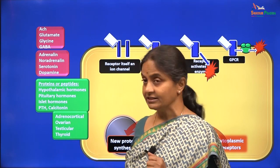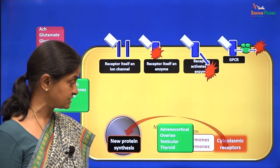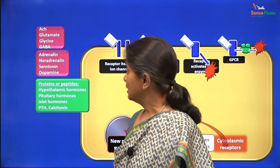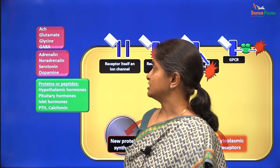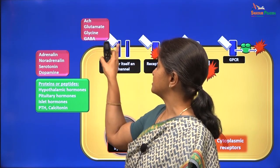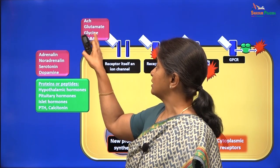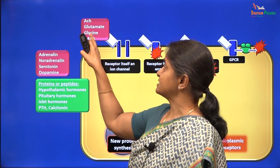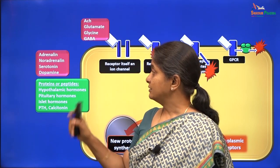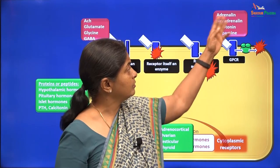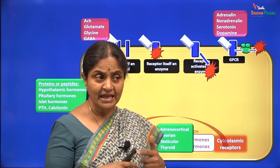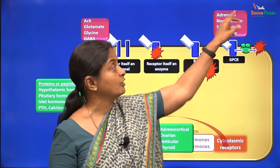The steroid hormones and the thyroid hormones act through cytoplasmic receptors and cause nuclear transcription and new protein synthesis. These neurotransmitters have ionotropic receptors — nicotinic acetylcholine receptors which are ion channels themselves, AMPA and NMDA glutamate receptors, glycine receptors — all are ion channels themselves. The catecholamines, serotonin and dopamine act through G-protein coupled receptors, and many examples of G-protein coupled pathways involved adrenaline.